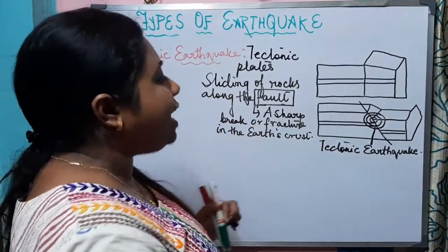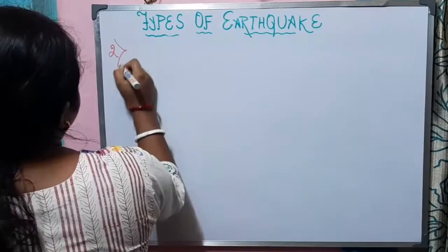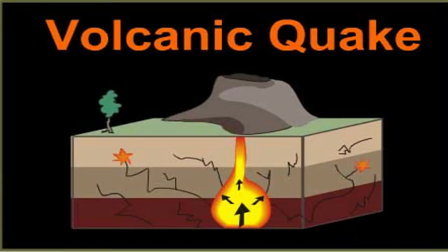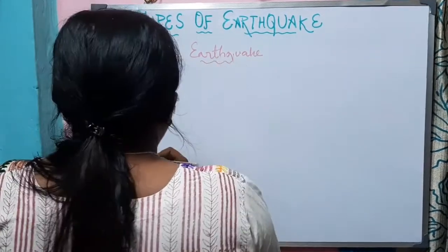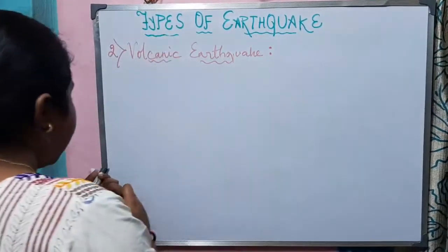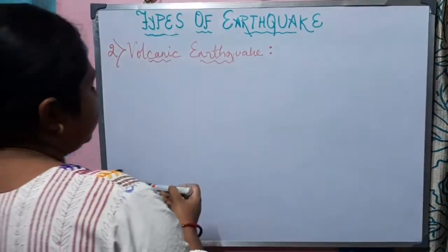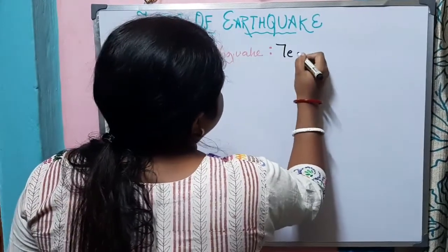The second type is the volcanic earthquake. The volcanic earthquake is a special type of tectonic earthquake.